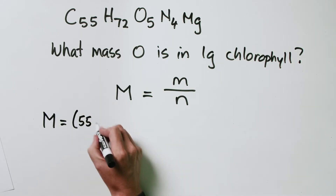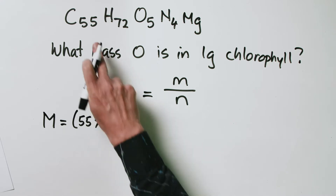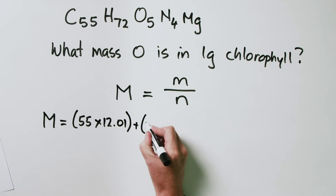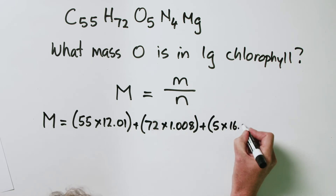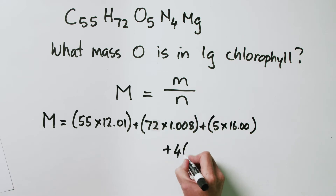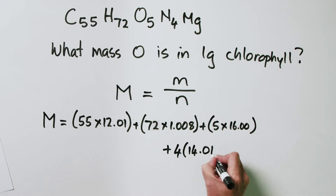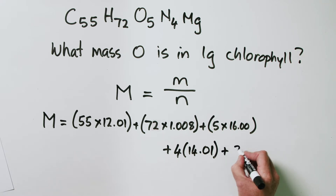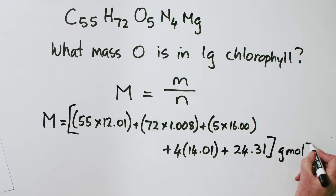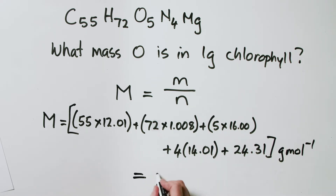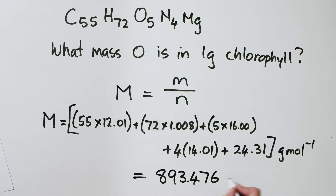So we go to our trusty periodic table. The first thing we're going to do is calculate the molar mass of chlorophyll: 55 times 12.01, plus 72 times 1.008, plus 5 times 16.00, plus 4 times 14.01, plus 24.31 grams per mole for magnesium. If you add all of those up, you get 893.476 grams per mole for the molar mass of chlorophyll. This is a decent-sized molecule.